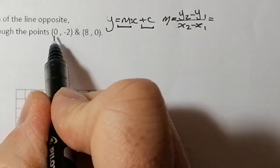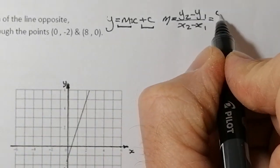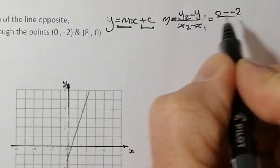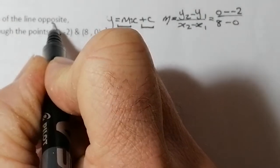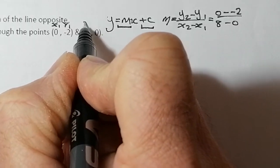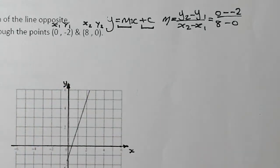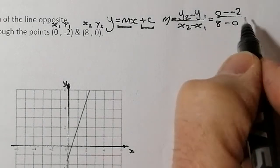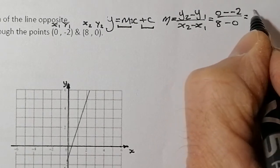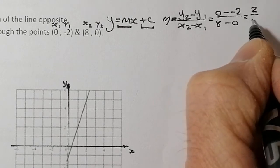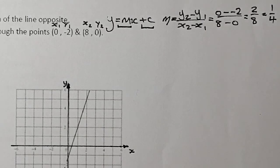I'm going to use (8, 0) as my second point and (0, -2) as my first point. So I'm going for 0 take away negative 2, all over 8 take away 0. You can label them: x1, y1 for the first point and x2, y2 for the second. So 0 take away negative 2 gives me positive 2 on top and 8 on the bottom, which simplifies down to 1/4. That's my gradient.